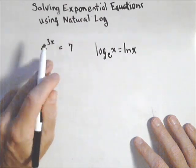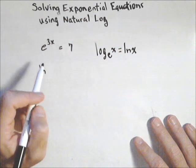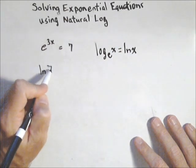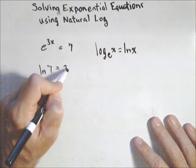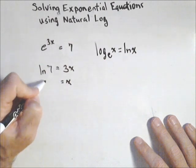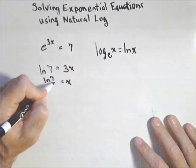We're taking natural log of 7 and that's going to give us our exponent, which is 3x. Last step, divide both sides by 3, we get x equals ln of 7 over 3.